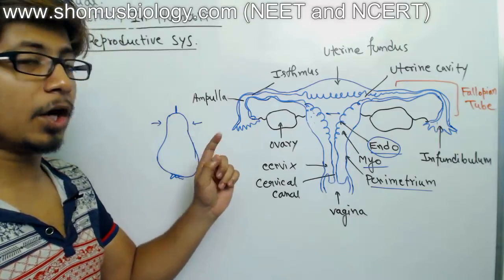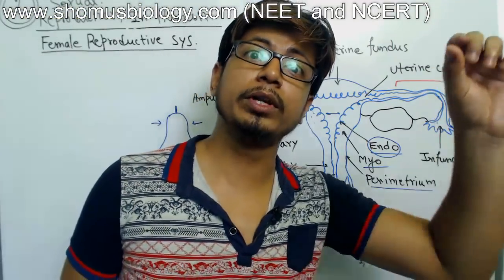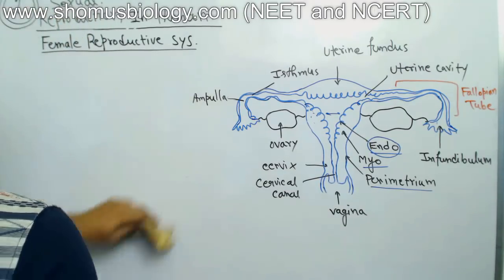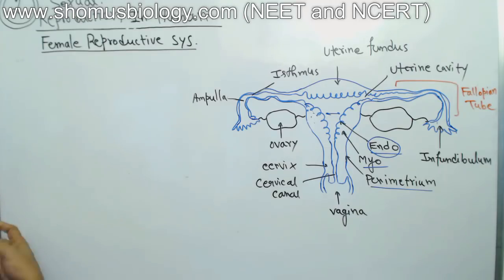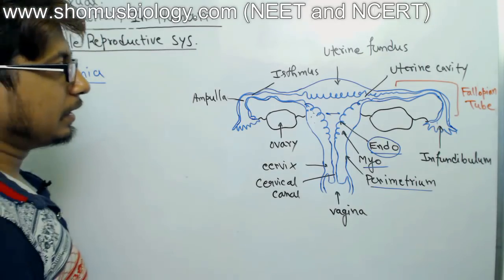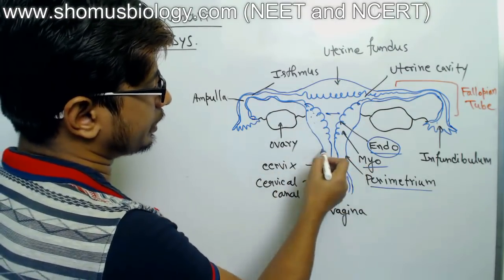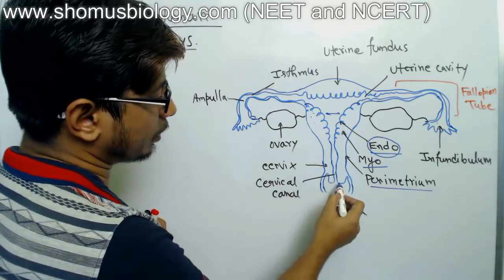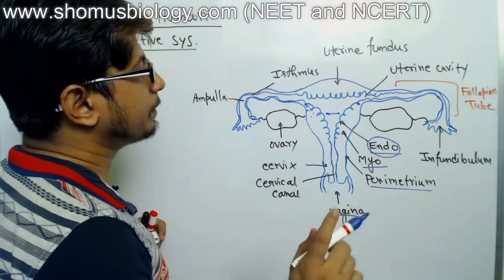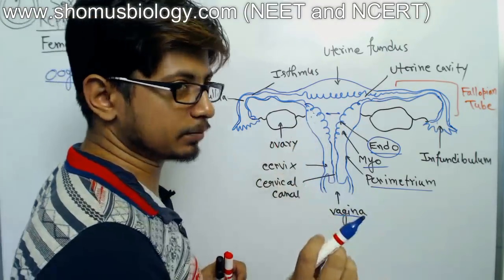In the female reproductive system, the primary or mother gamete cells are known as oogonium (plural: oogonia). The uterus has a cervix and cervical canal that opens outside the body via the vagina. The female reproductive system is also linked with the excretory system, so urine also flows out from the same region.